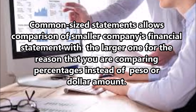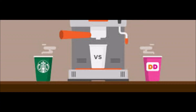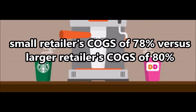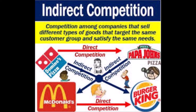For example, a small retailer can compare its cost of goods sold of 78% to a much larger retailer's cost of goods sold of 80%.